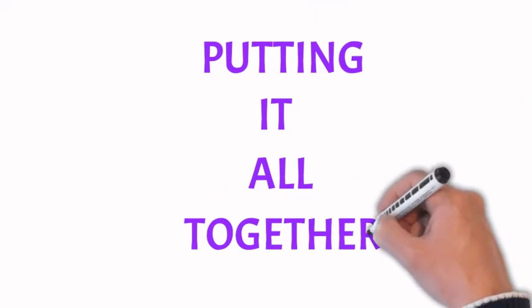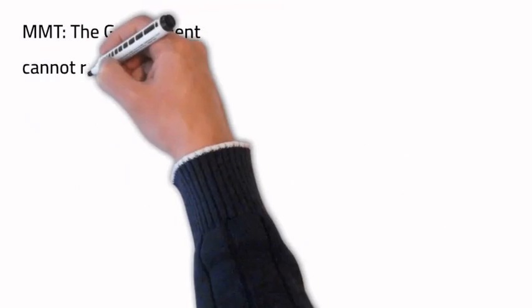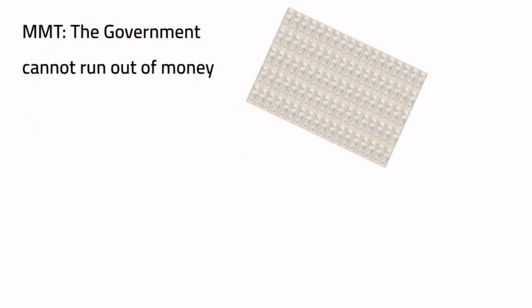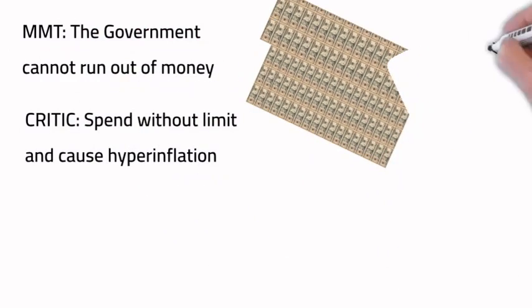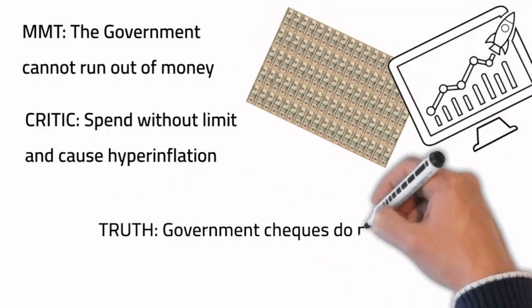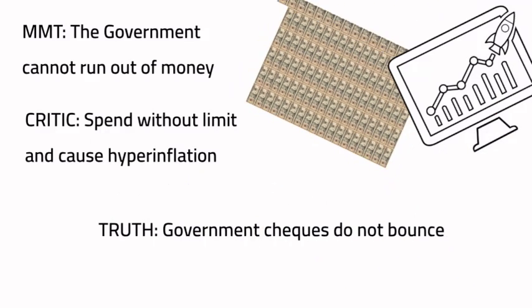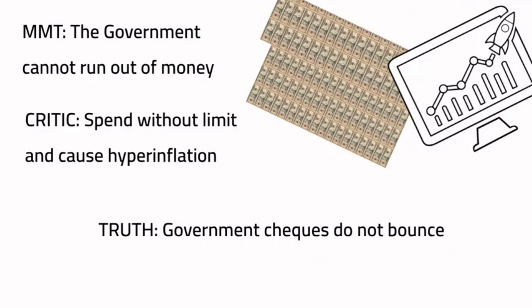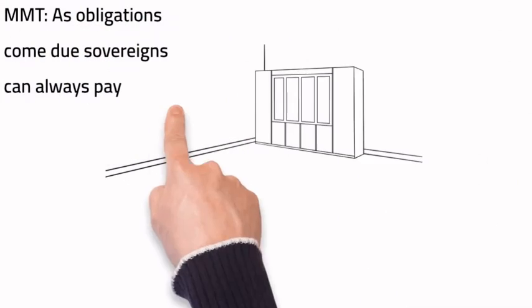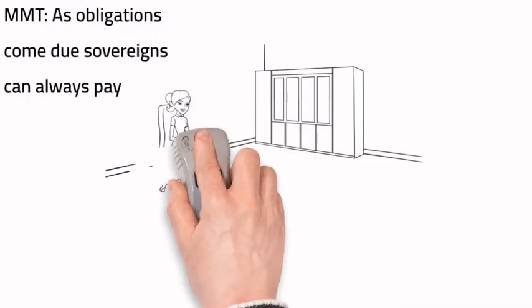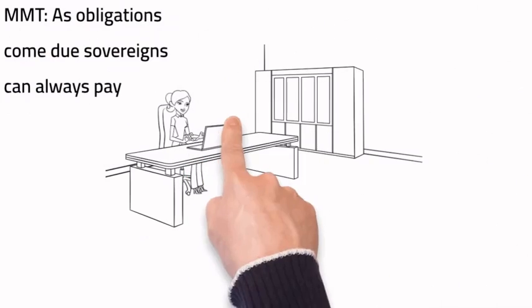Putting it all together: MMT says the government cannot run out of money. Critics accuse MMT of advocating spending without limit and hyperinflation. As Warren Mosler puts it, government checks don't bounce. As obligations such as interest payments come due, sovereigns can always pay.